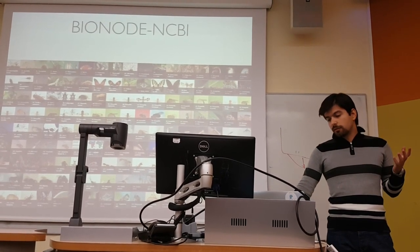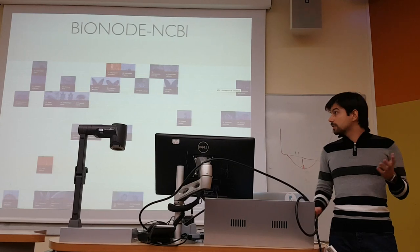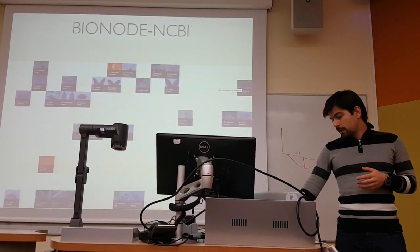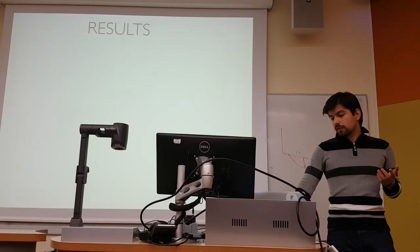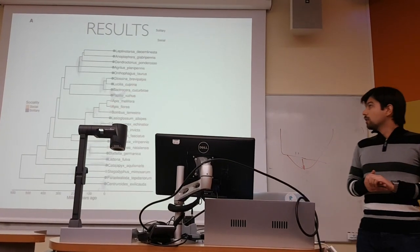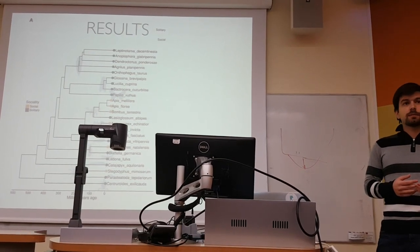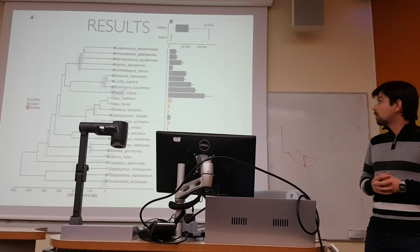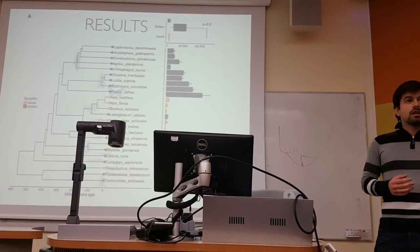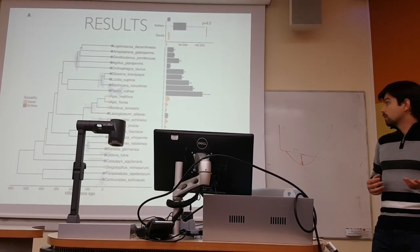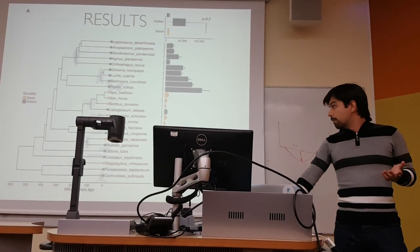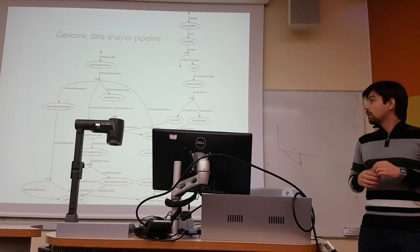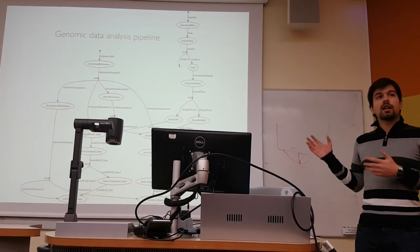With this tool, I realized I could only use a subset of the available data. My main results are that looking at 24 insect species, we do see lower genetic diversity in the social ones. But to get to this result, I was building pipelines that looked something like this.